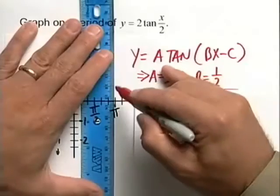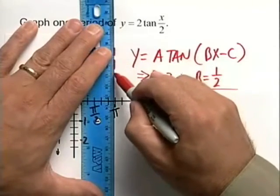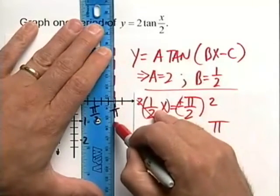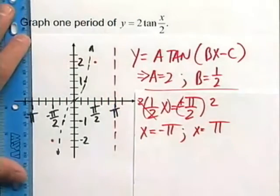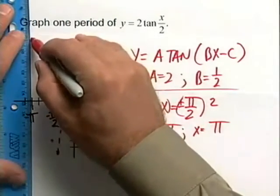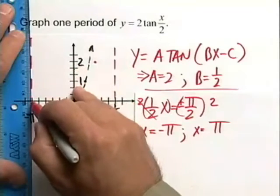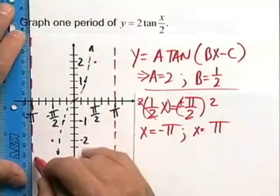So let's go ahead and draw those in here. We want to draw those in. Know that our function 2 times the tangent of x over 2 is not defined at negative pi and positive pi. We want to use this in our graph.